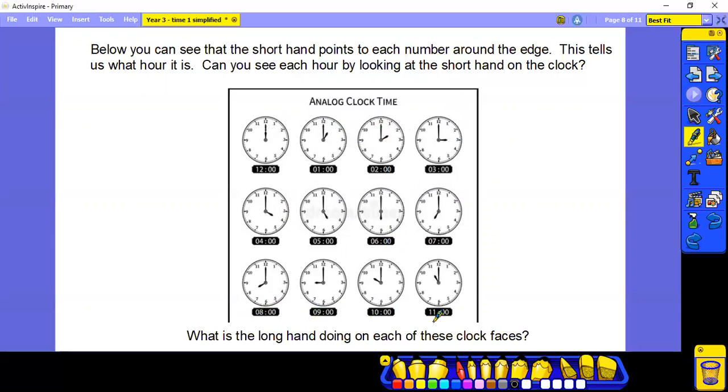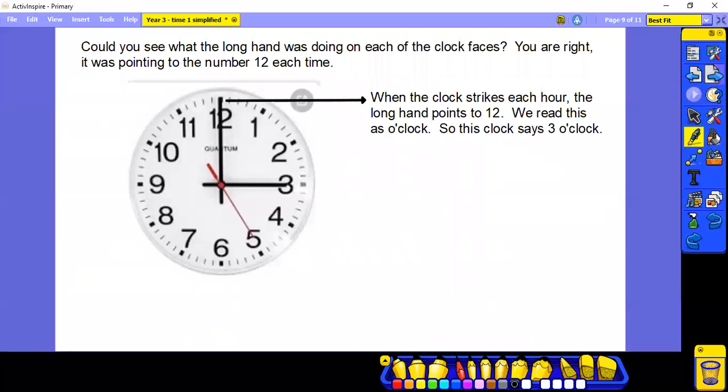What is the long hand doing on each of these clock faces? Have a good look now. Could you see what the long hand was doing? Yeah, you're right. It was pointing to the number 12 each time. When the clock strikes each hour, the long hand points to the 12. We read this as o'clock. So this clock says 3 o'clock.